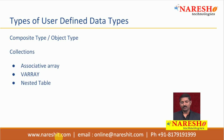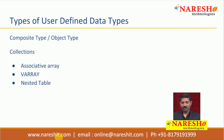We basically have two types of user-defined data types: composite type, which is also called object type, and collections. Collections have associative array, varray, and nested table. So composite type or object type and collections are the two major types of user-defined data types. In this session we shall see composite type or object type.